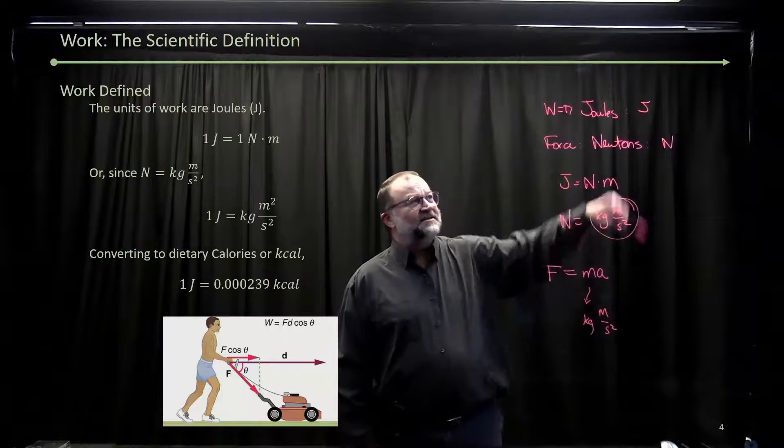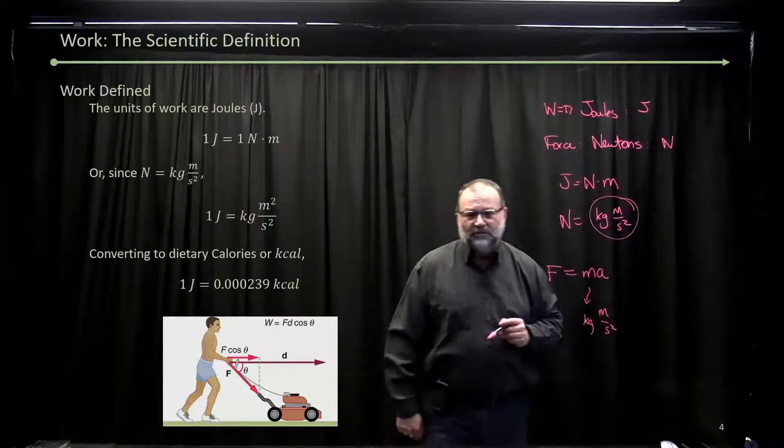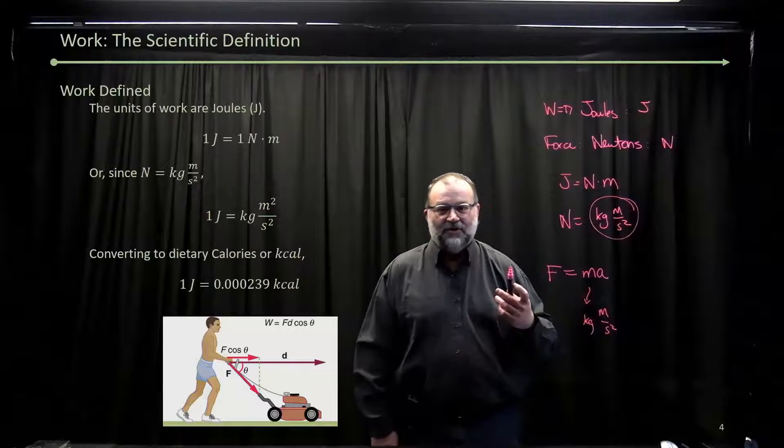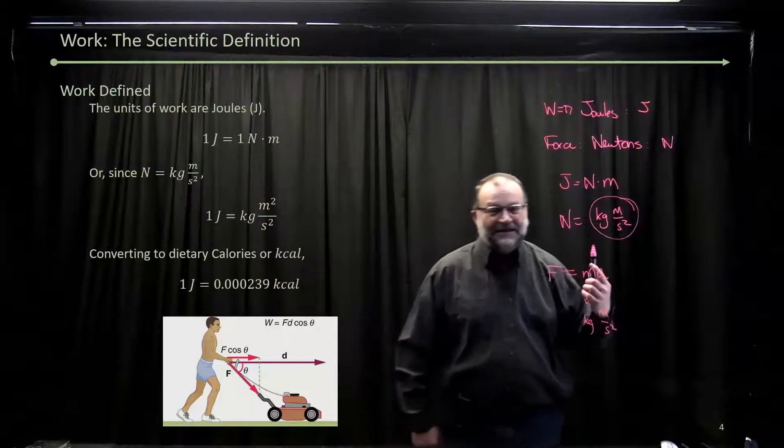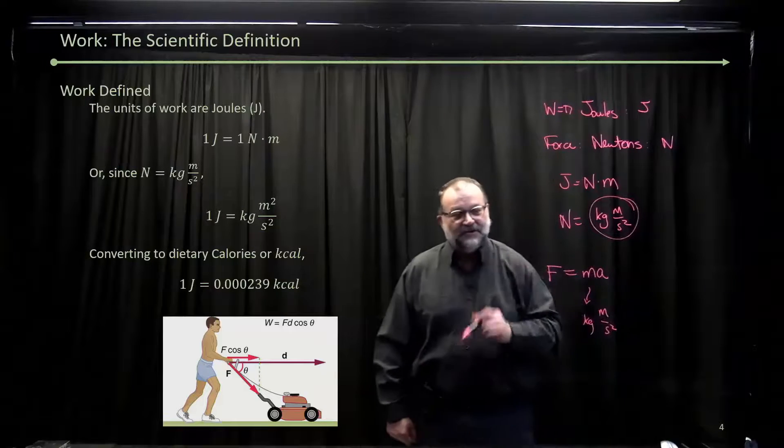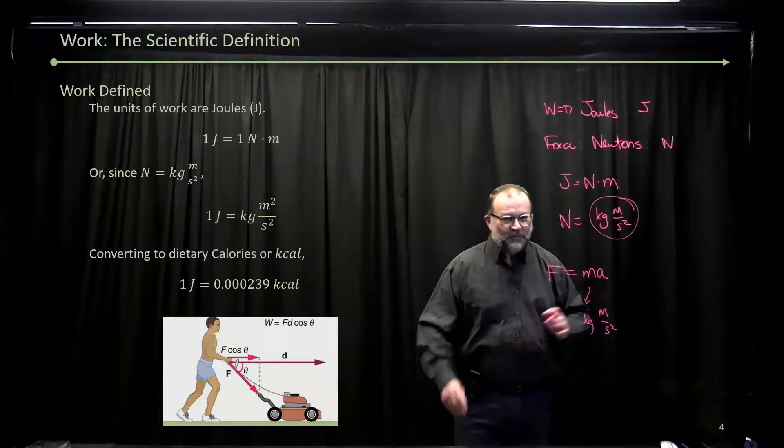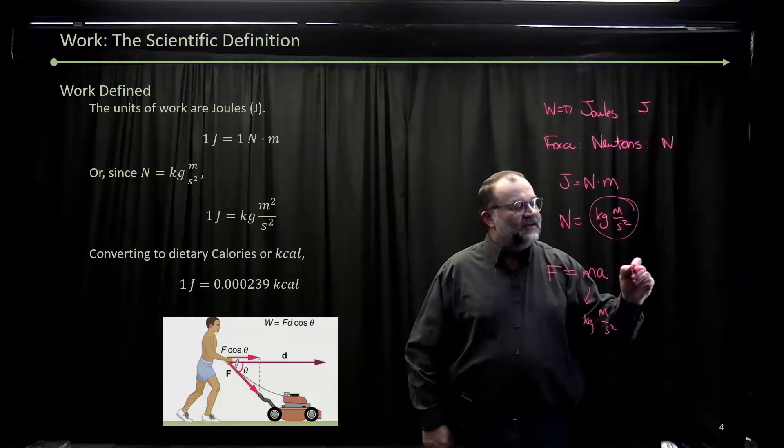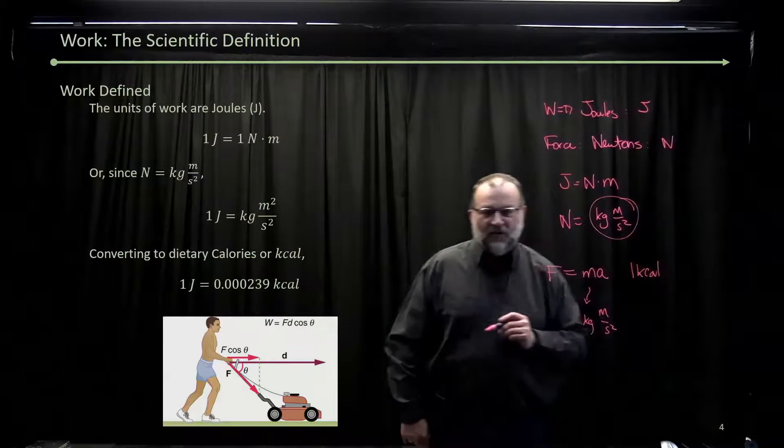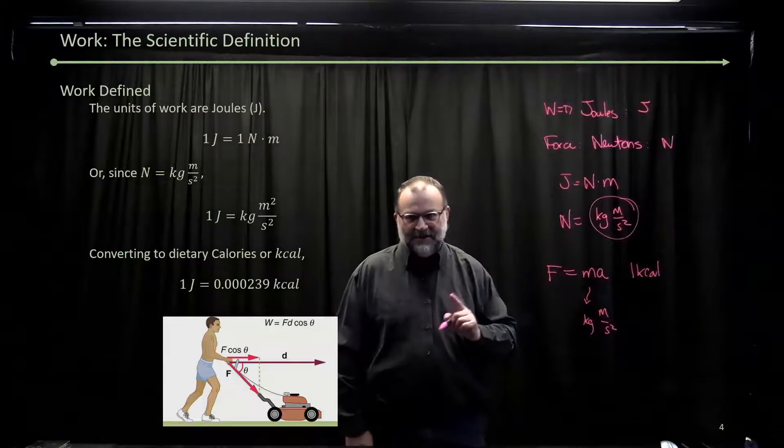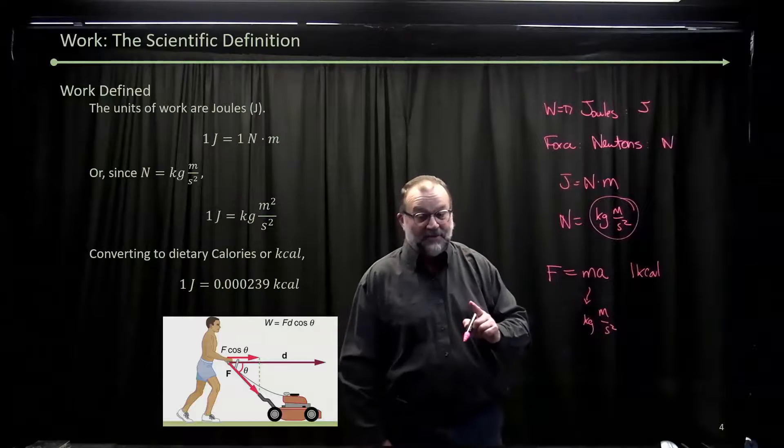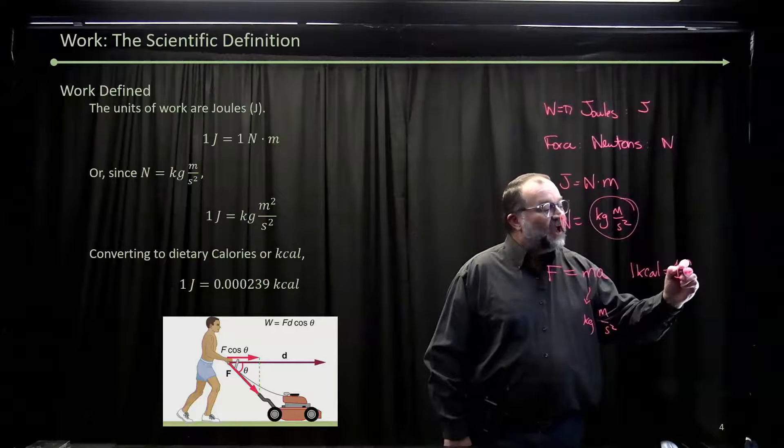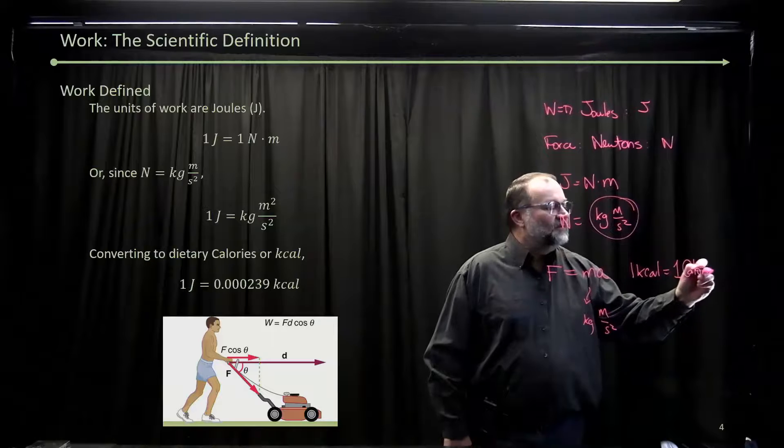So this gives us work in joules. One joule is also 0.000239 kilocalories. Now, here's one thing: when we get into this, and you're gonna have some problems around this, one kilocalorie—1000 calories in physics or chemistry—are just one calorie in food.